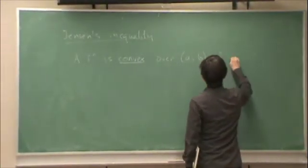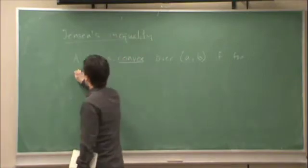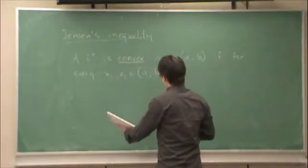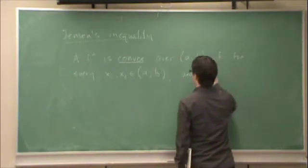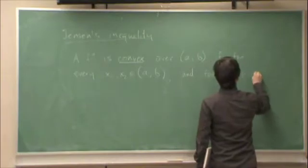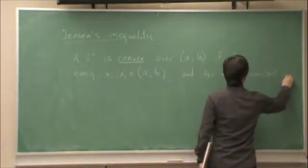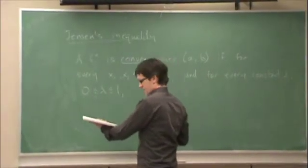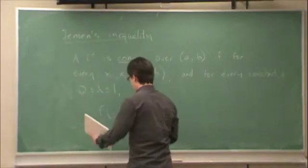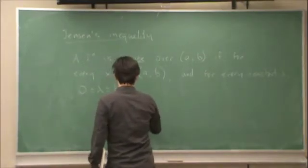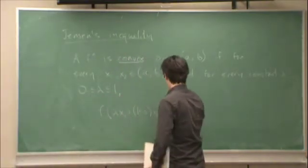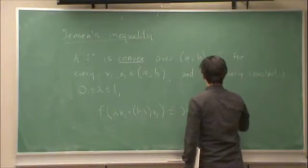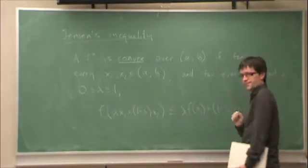A function is convex over the interval a to b if for every x1 and x2 on that interval, and for every constant lambda on the range 0 to 1, then f of lambda x1 plus 1 minus lambda x2... what does this mean?